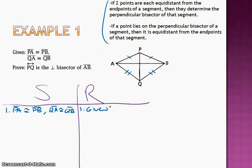Alright, I'm going to check my two theorems, see if any of them apply. So I have, if two points are each equidistant from the endpoints of a segment, then they determine the perpendicular bisector of the segment. And if a point lies on the perpendicular bisector of a segment, then it is equidistant from the endpoints of that segment.